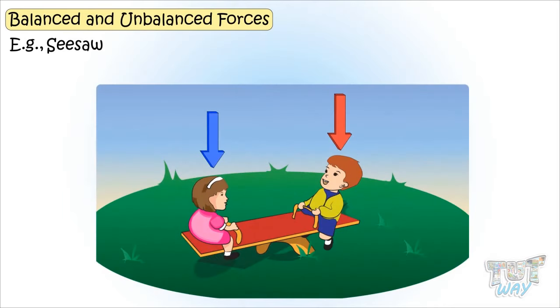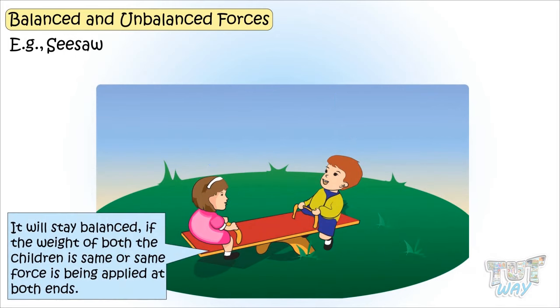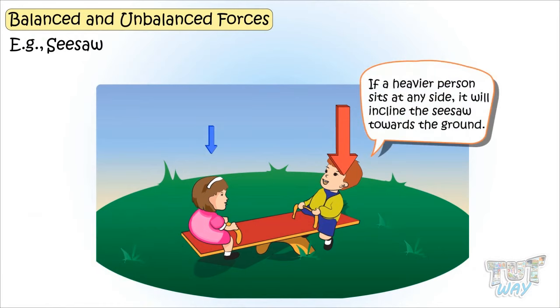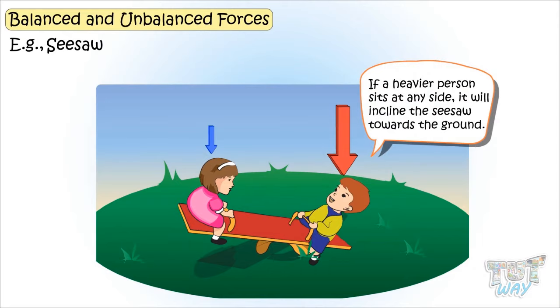Here is an example of a seesaw. It will stay balanced if the weight of both children is the same, or the same force is applied at both ends. A heavier person sits at any side, it will incline the seesaw towards the ground. That is, unbalanced forces now applied to the seesaw.